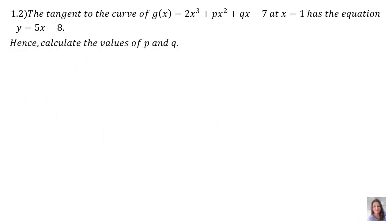This next part is related to question 1.1. Remember, we proved that the point (1, −3) lies on both the tangent and the curve, since it was the point of contact. Now the question says: hence, calculate the values of p and q — the variables in the function. They are combining your knowledge of simultaneous equations and calculus, more specifically tangents.